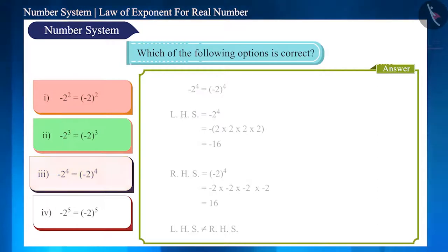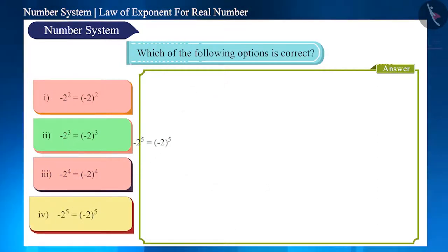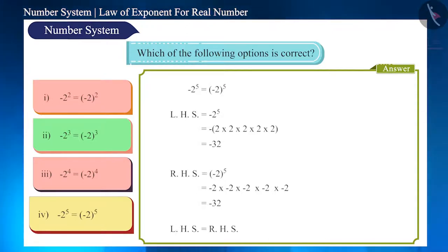So this option is incorrect. Look at the fourth and last option. It has minus 2 raised to power 5 on the left side, and its value is minus 32. The right side has the minus 2 in brackets raised to the power 5, and its value is also minus 32. That is, the left hand side is equal to the right hand side.